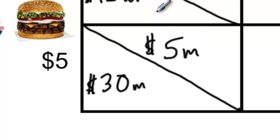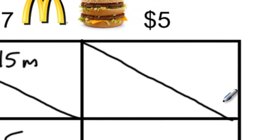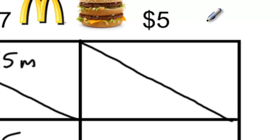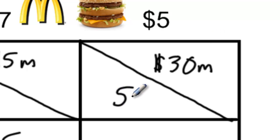The rationale: Burger King now has the more competitively priced hamburger meal, therefore a large percentage of McDonald's customers will shift their demand to Burger King and consume fewer Big Mac meals. Conversely, if Burger King kept its price at seven dollars and McDonald's lowered its price to five dollars, the same logic applies: McDonald's profits would increase to thirty million dollars at the expense of Burger King, whose profits would fall to five million dollars.